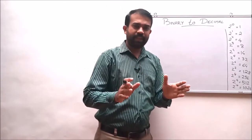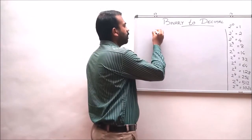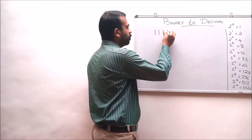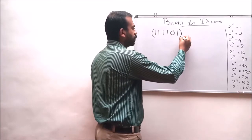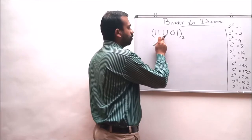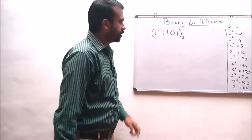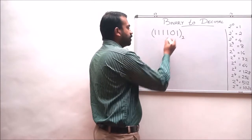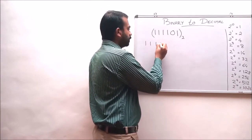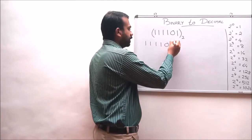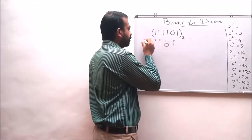Let us consider one more example: convert 111101 to the base 2 into its decimal equivalent. The digit positions for 111101 are: 0th, 1st, 2nd, 3rd, 4th, and 5th position from right to left.